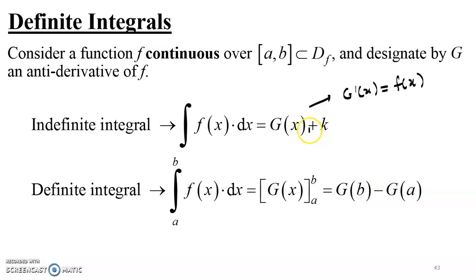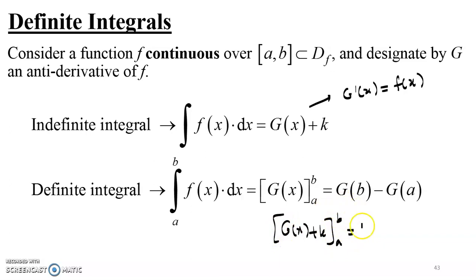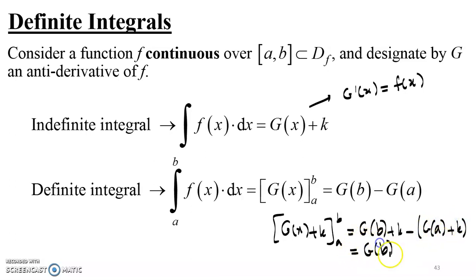We do ignore the constant of integration, because when we subtract, that constant of integration will end up being canceled anyway. By considering g of x plus k evaluated between a and b, and applying the upper bound minus the lower bound, we get g of b plus k minus g of a plus k. Expanding that gives g of b minus g of a, and k minus k cancels out. This is why, whenever we're dealing with definite integrals, we just ignore that constant of integration over the interval between a and b.